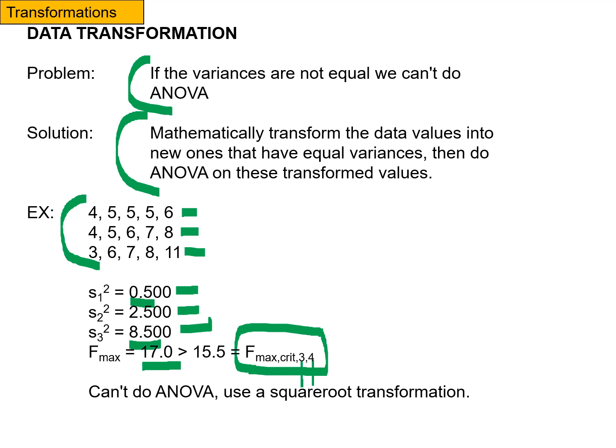each of which has four degrees of freedom, the critical value is 15.5. So a 17 is larger than 15.5. I would reject my null hypothesis of equal variances and I can't do an ANOVA and there's no good alternative. So instead, what I'm going to think about doing is a square root transformation to this data.